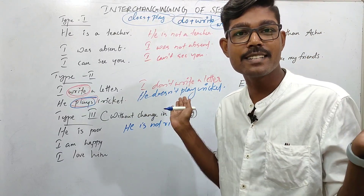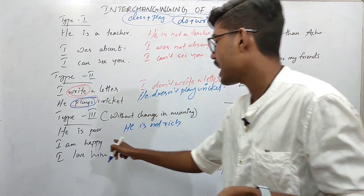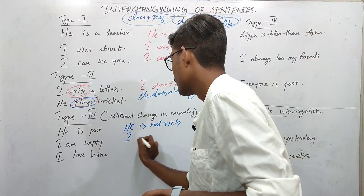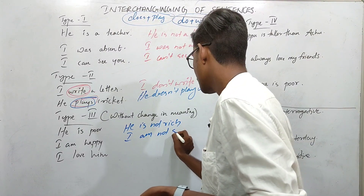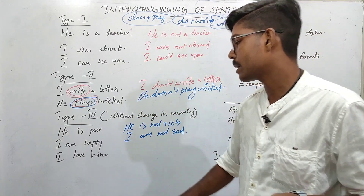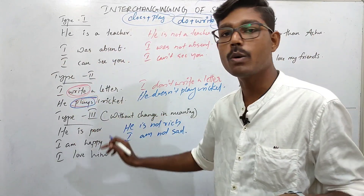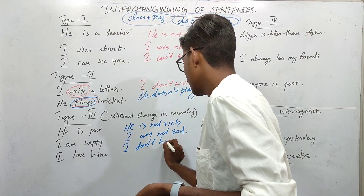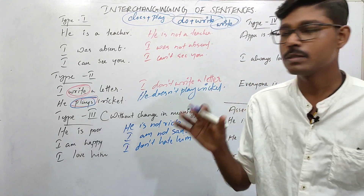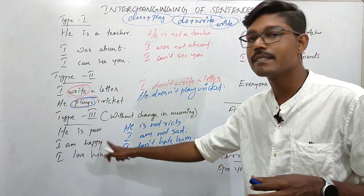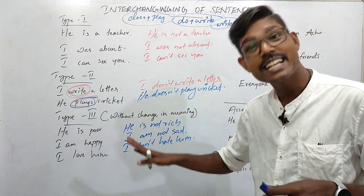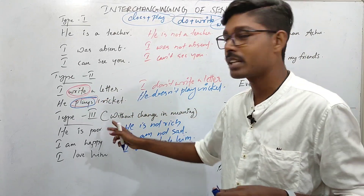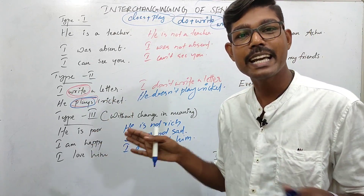Another example: 'I am happy' — negative without changing meaning: 'I am not sad.' Also: 'I love him' — the opposite is: 'I don't hate him.' So with adjectives and words, we write the opposite word. The opposite words are: rich, happy, hate.